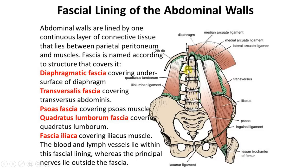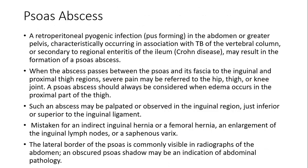Whatever disease process or pus-forming occurs, it lies behind this fascia. And obviously, when it is lying behind this fascia, it will travel under the fascia and move into the lower limb, below the inguinal ligament, under this fascia. So, before you understand the psoas abscess, its formation and location, the normal attachment of the fascia and the muscle attachment of the iliopsoas is very important to know. Then we come to the psoas abscess.